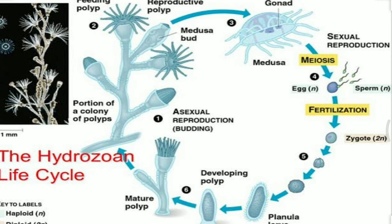When the medusa matures, it produces gonads. The gonads are produced as a result of meiosis, and the sperm and egg fuse to form the zygote. Once the zygote is formed, it develops into the larval stage called planula. The planula feeds and, once capable of giving rise to the polyp form, attaches to the substratum and develops into a polyp. After a couple of days, the mature polyp forms with reproductive or feeding polyp forms which produce medusa. This is how alternation of generation takes place in hydrozoans.